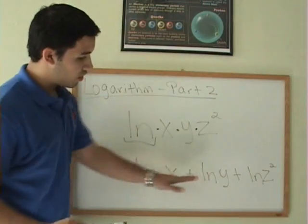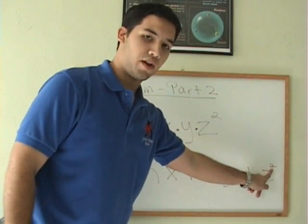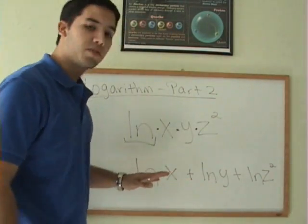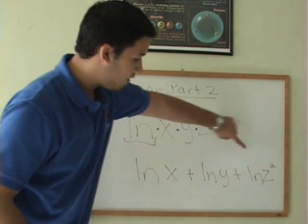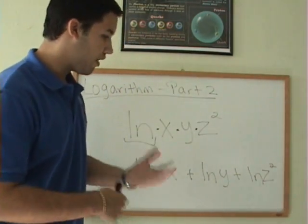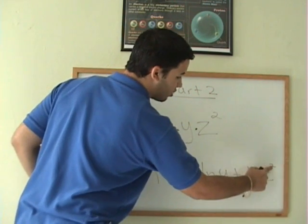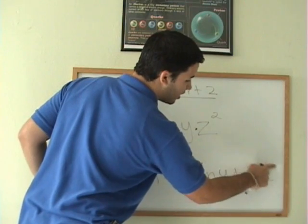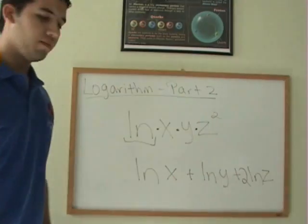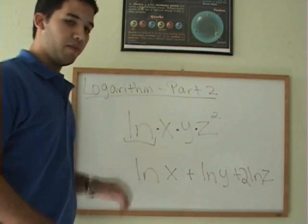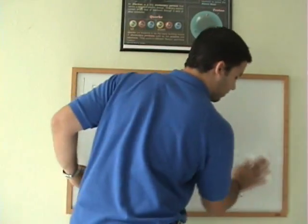Everything is correct up to here, but we have a problem — the squared. When we're expanding, we cannot have any exponent. So what you're going to do is take the exponent and put it here in the front. Instead of writing ln(z²), this 2 gets moved to the front. That's another very important property you need to learn.